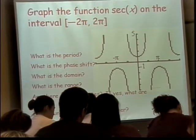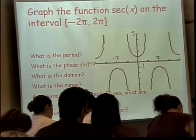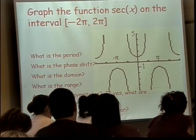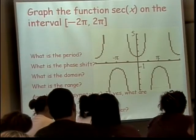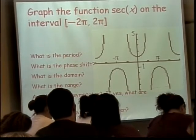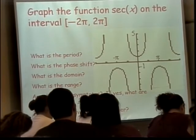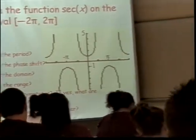Now, my cosine function went from where to where? Remember, it had a range — it only went from negative one to one. When I take one and put it over some number between negative one and one, what kind of numbers do I get?